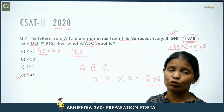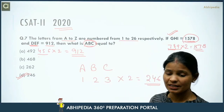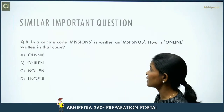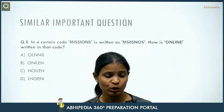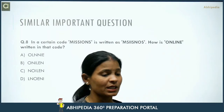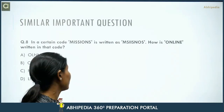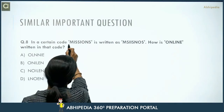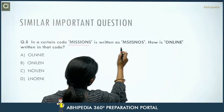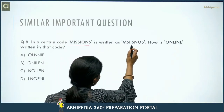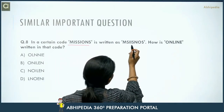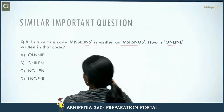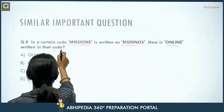Now let us practice some similar types of questions. In a certain code, 'mission' is written as 'MSIISNOS'. How is 'online' written in that code?